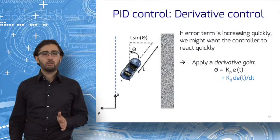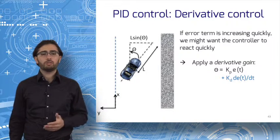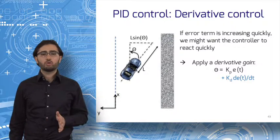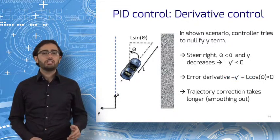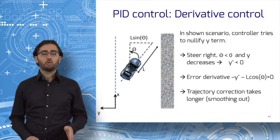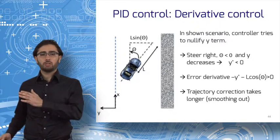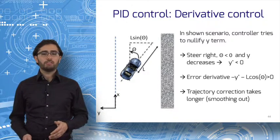Now, the steering angle reacts to how fast or how slow the error is increasing, or indeed decreasing. But derivative control doesn't come for free. There is a trade-off. In the scenario you see here, the car is to the right of the centerline, so y is positive, and minus kpy term will be negative. Steer right. So y is decreasing. y prime, the derivative of y is negative. And theta is negative, pointing to the right.